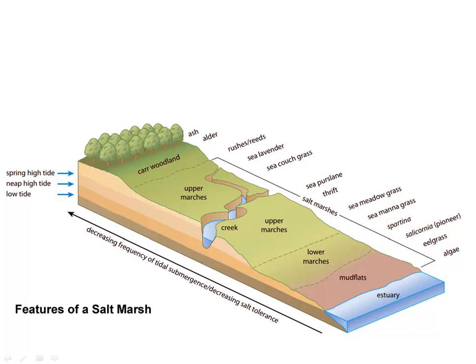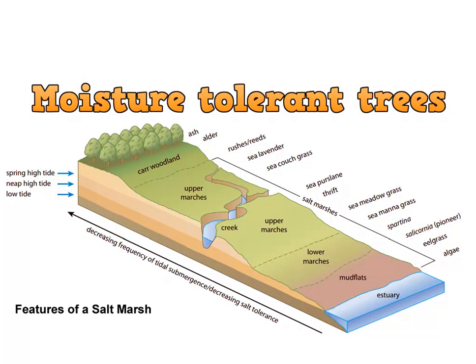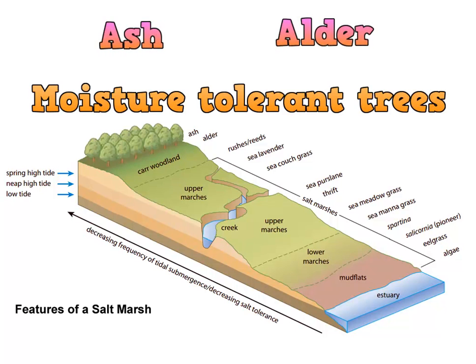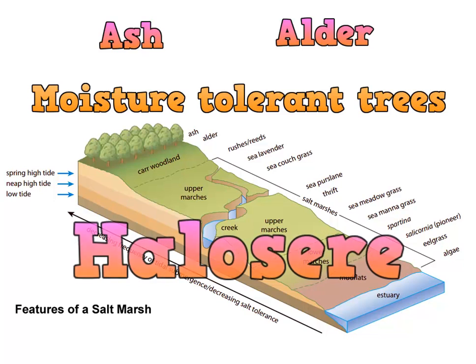Here's a diagram of a fully developed salt marsh. As you can see at the back, you might get some moisture-tolerant trees, like ash and alder, forming. This whole process of succession is called halosere — the succession of building up the salt marsh in this way.